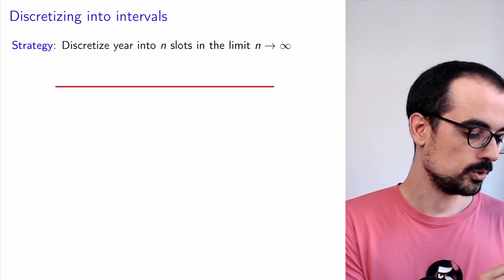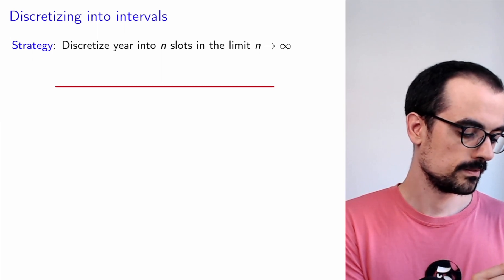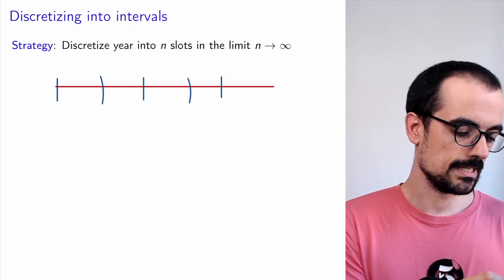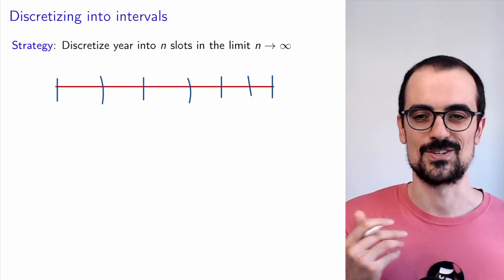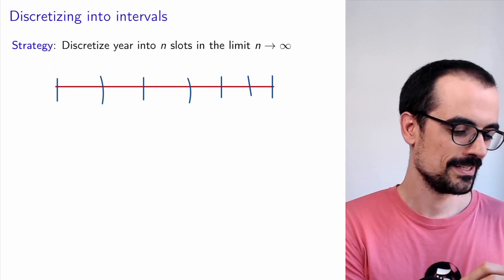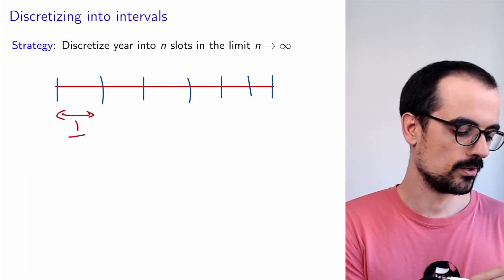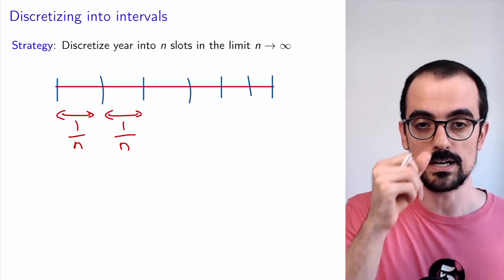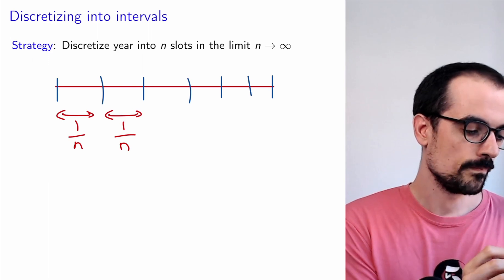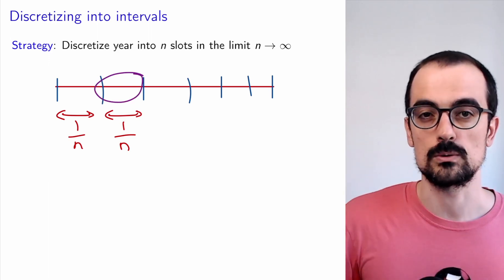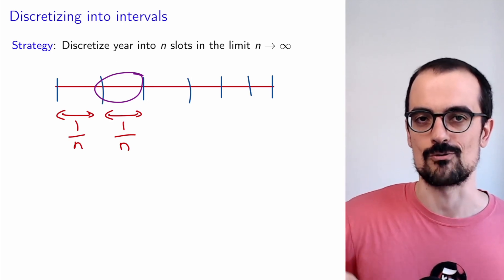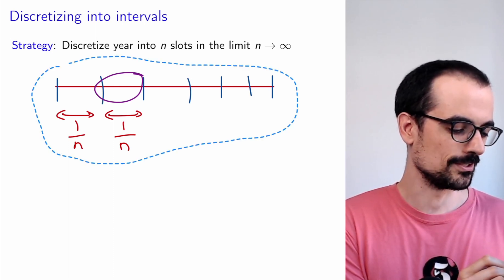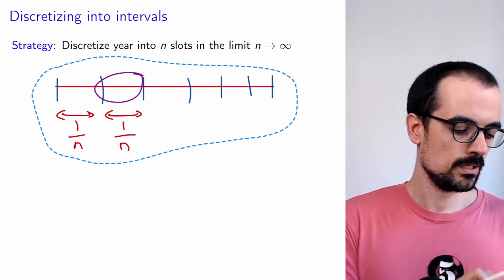We're going to cut it up into N slots. Each of these guys have the same length, each of them have length 1 over N. We're going to imagine that we have discretized the year into N slots, each of them have length 1 over N, and we're going to consider the limit where N goes to infinity because we want these slots to be arbitrarily small so that we can apply our assumptions about this earthquake arrival. So hopefully that makes sense. I'm going to actually save this picture even though it's not my best work in case we need it later.